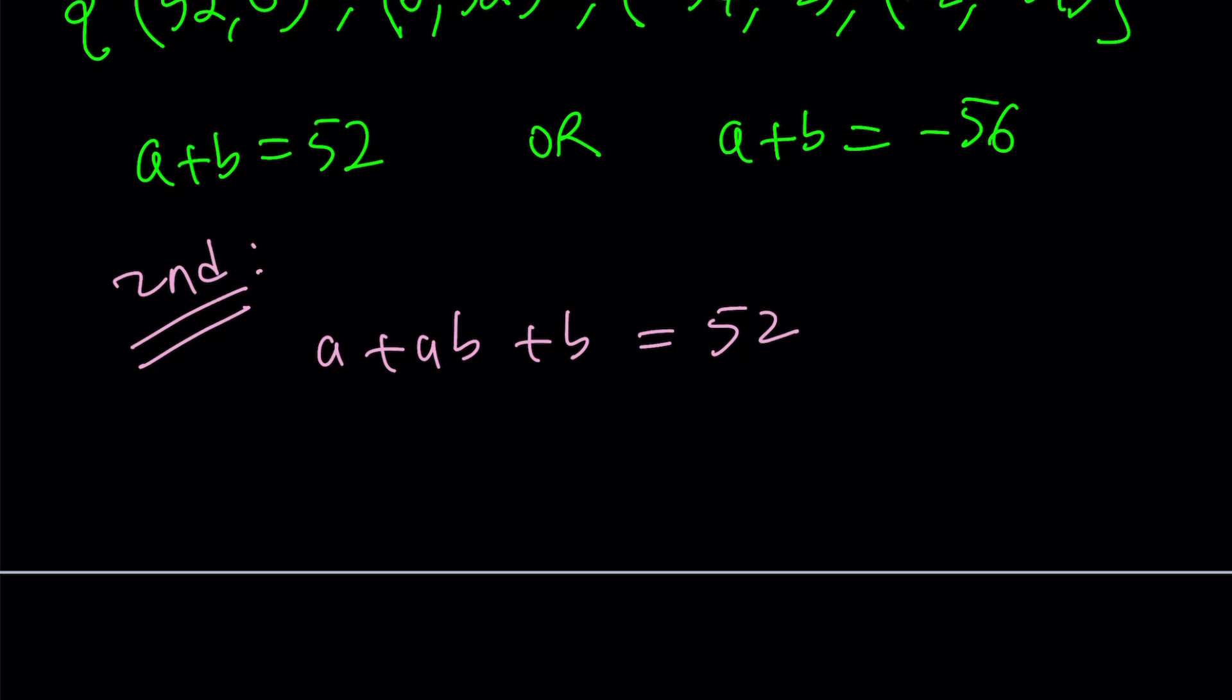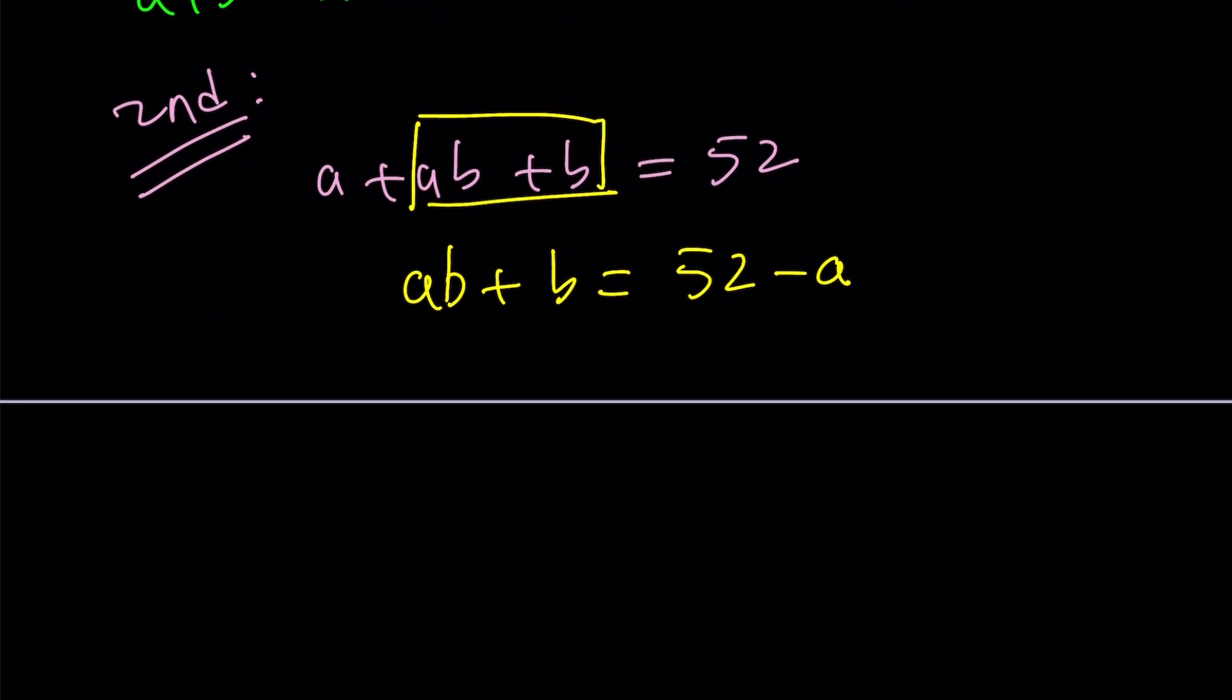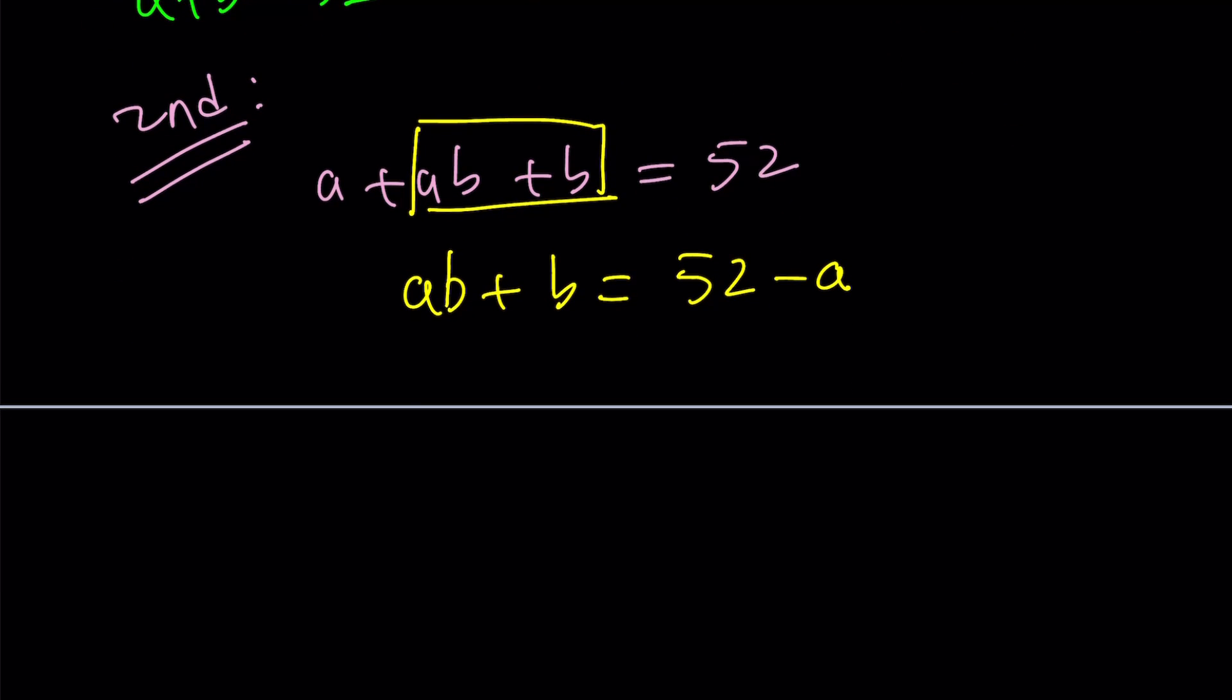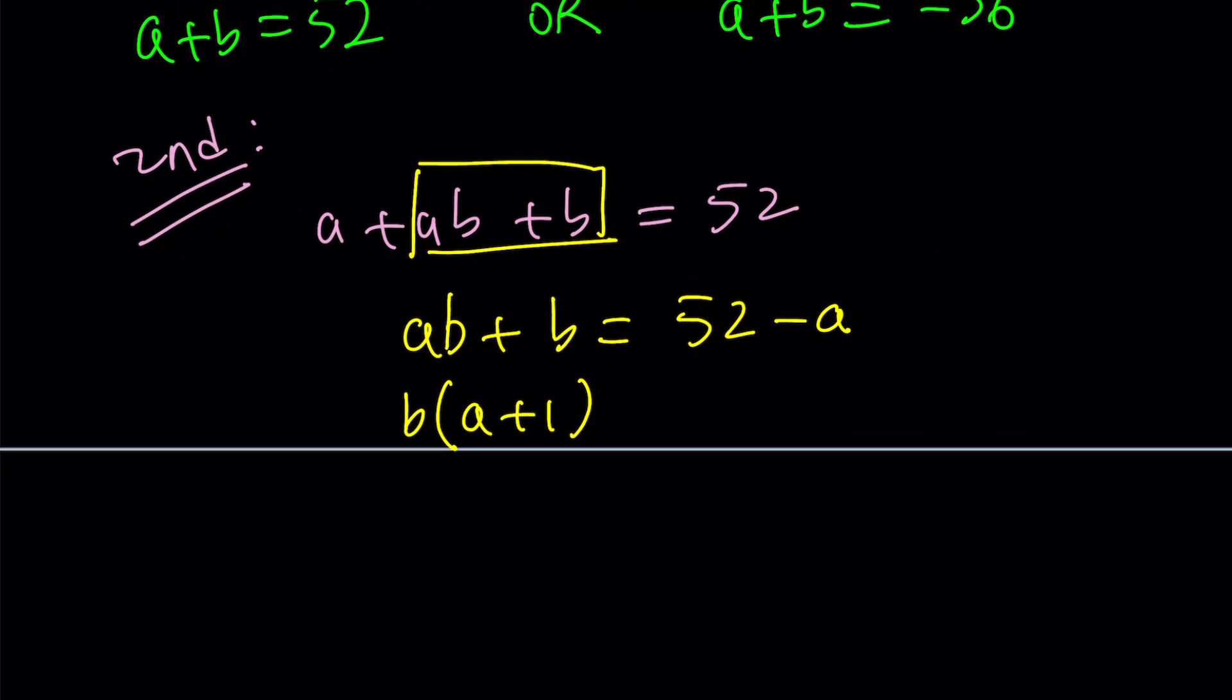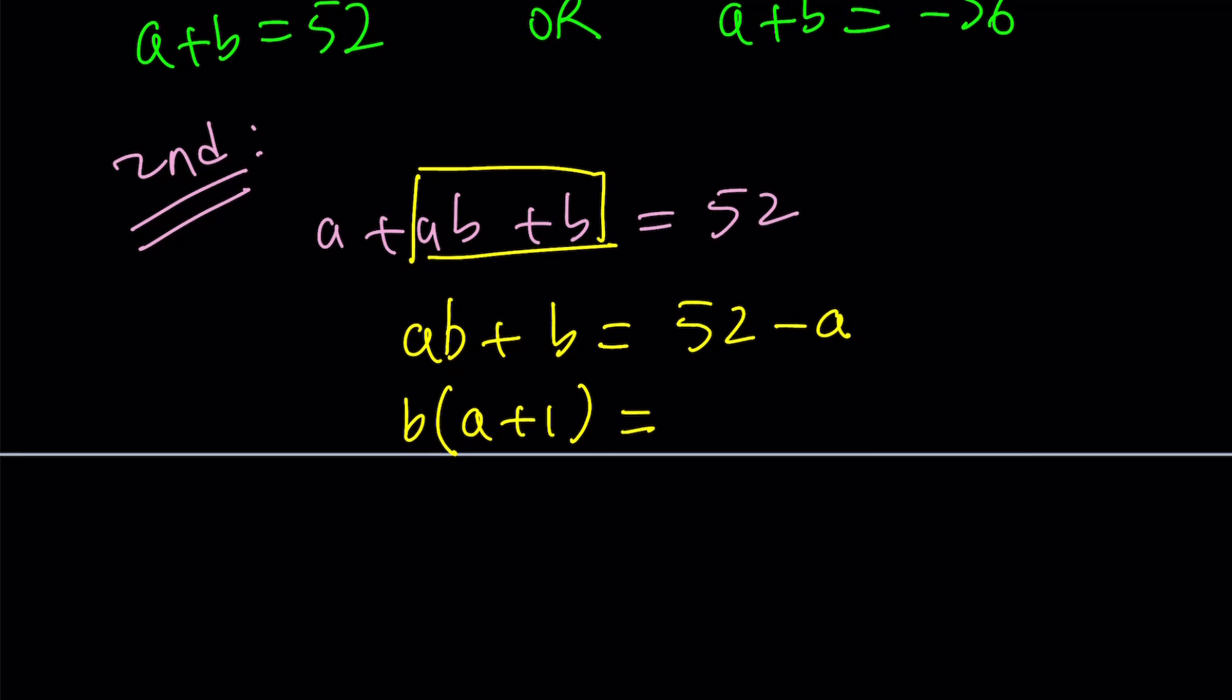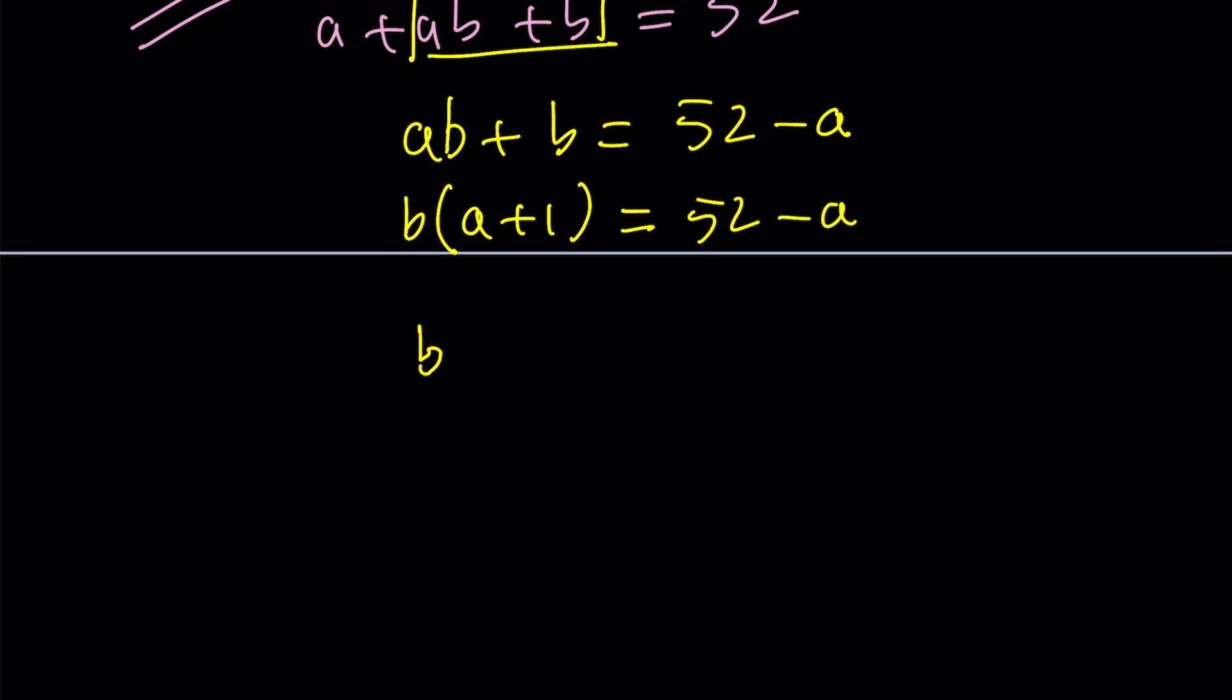So this time we're going to keep these two terms on the left and subtract a from both sides. Now what is the reasoning behind this? The idea is to factor out the b. When you factor out a b, you get a plus 1. And we pretty much did the same thing with the first method, but it was slightly different. This is going to be 52 minus a again. And now I want to divide both sides by a plus 1.